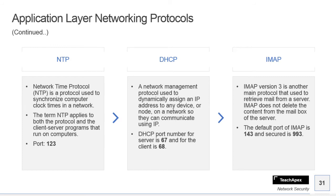Next we have IMAP — Internet Message Access Protocol. It is basically a standard protocol for accessing email on a remote server from a local client. IMAP is an Application layer protocol. IMAP version 3 is the latest version and is another main protocol used to retrieve mail from a server. IMAP does not delete content from the mailbox on the server.